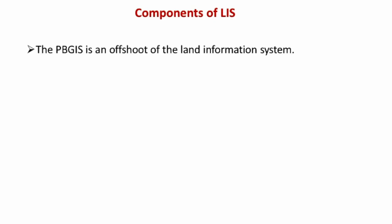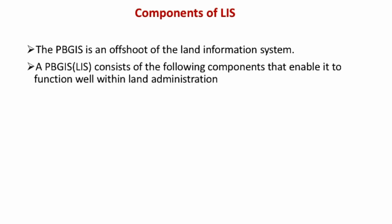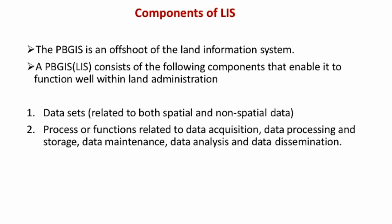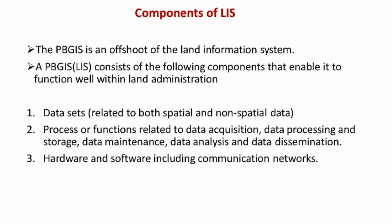Components of LIS include a parcel-based GIS system, which is preferable to the portion-based system currently used in Nepal — implementing a parcel-based system would better support land administration. The dataset should include both spatial and non-spatial data. Processes include data acquisition, data processing, storage, data maintenance, data analysis, and data dissemination. Hardware and software including communication networks, and well-equipped, highly skilled manpower are also needed.